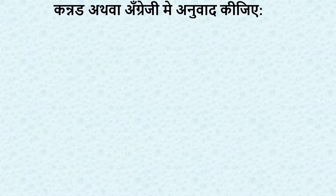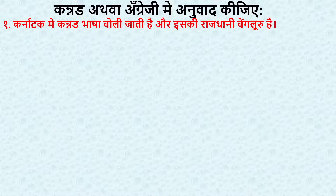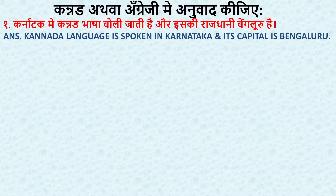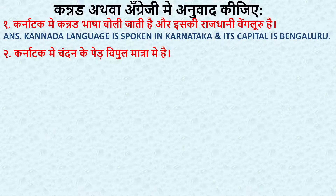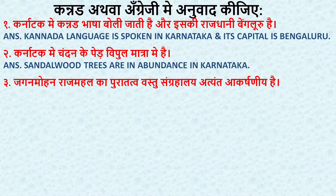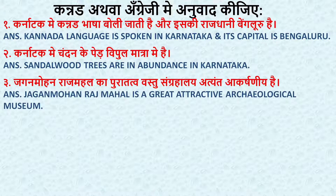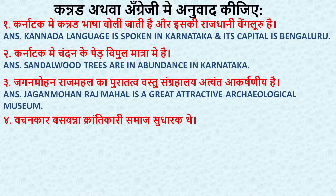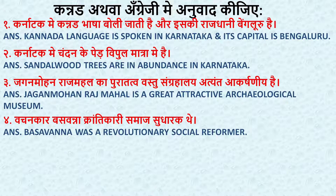Next section — Kannada athva Angrezi mein anuvad kijiye. Translate either into Kannada or English; I am translating into English. Karnataka mein Kannada bhasha boli jati hai aur iski rajdhani Bengaluru hai — Kannada language is spoken in Karnataka and its capital is Bengaluru. Karnataka mein chandan ke ped vipul matra mein hain — Sandalwood trees are in abundance in Karnataka. Jagan Mohan Rajmahal ka puratatva vastu sangralaya atyant aakarshuniya hai — Jagan Mohan Palace is a great attractive archaeological museum. Vachankar Basavanna krantikari samaj sudharak the — Basavanna was a revolutionary social reformer.